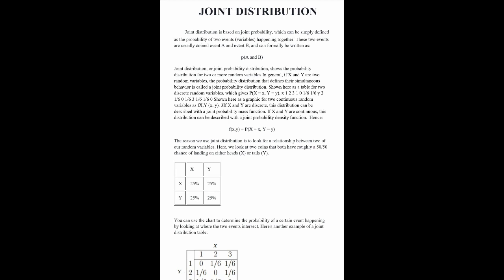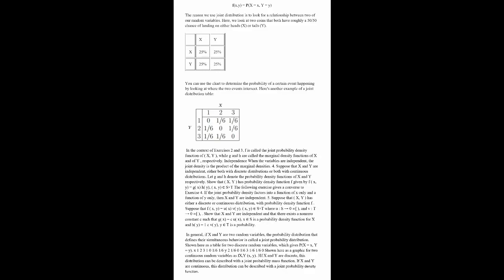The reason we use joint distribution is to look for a relationship between two or more random variables. Here we look at two coins that both have roughly a 50-50 chance of landing on either heads X or tails Y.